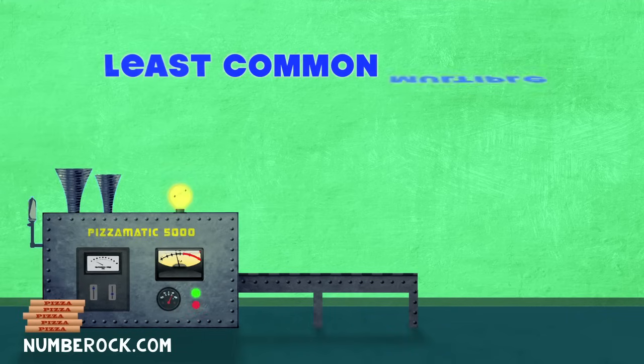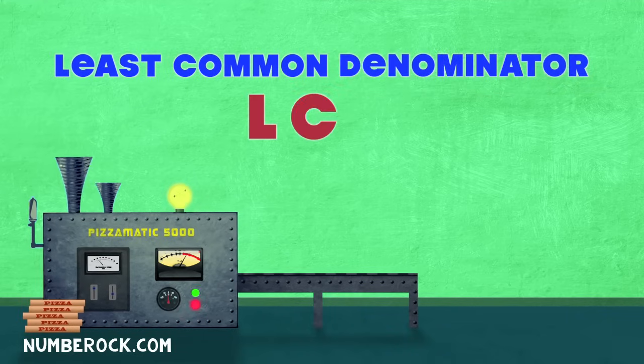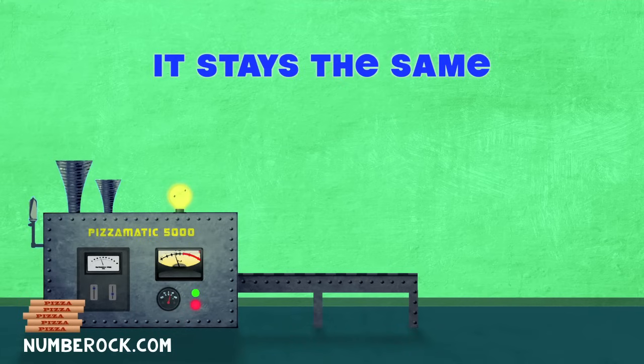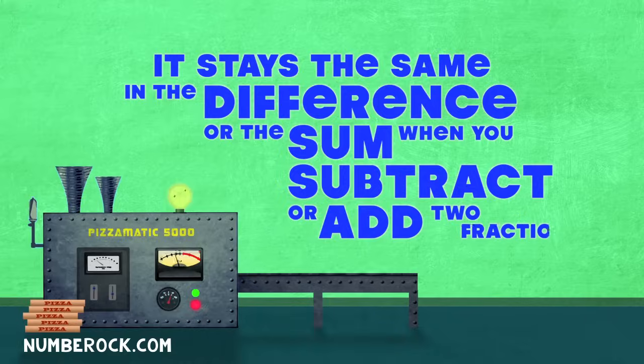The least common multiple can also be called the least common denominator, or LCD. It stays the same in the difference or sum when you subtract or add two fractions.